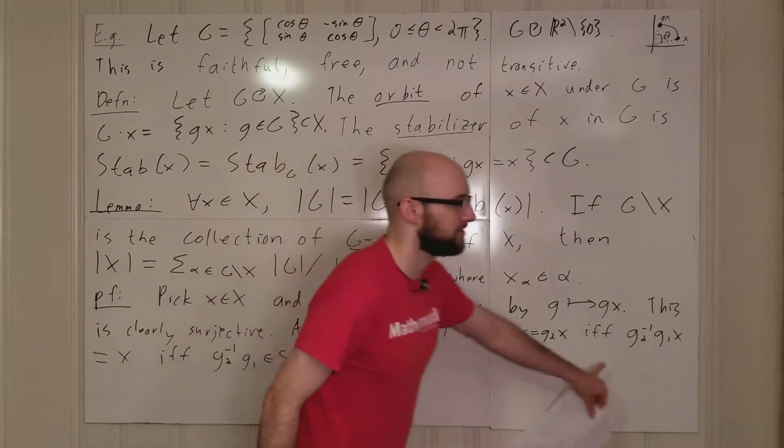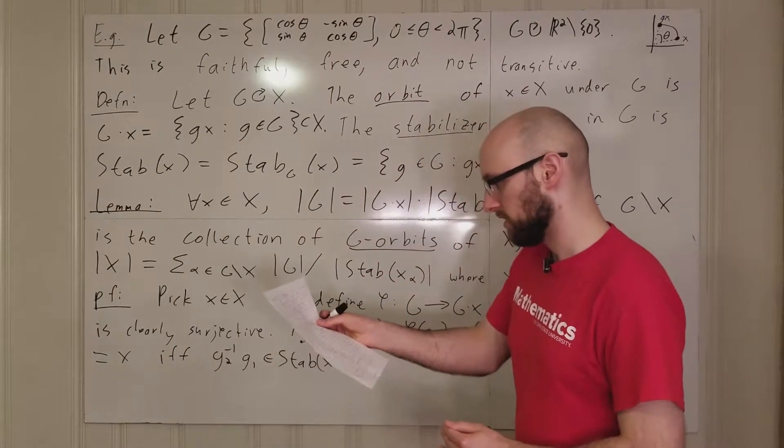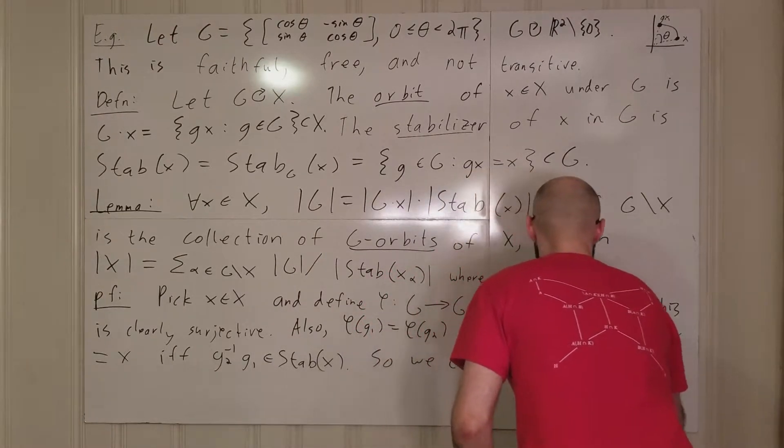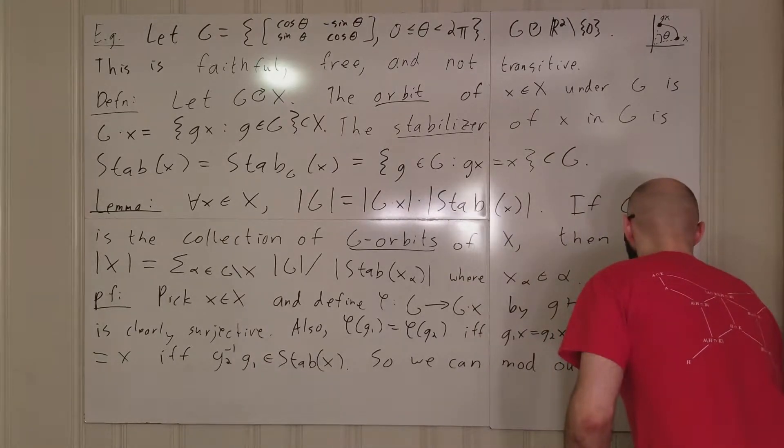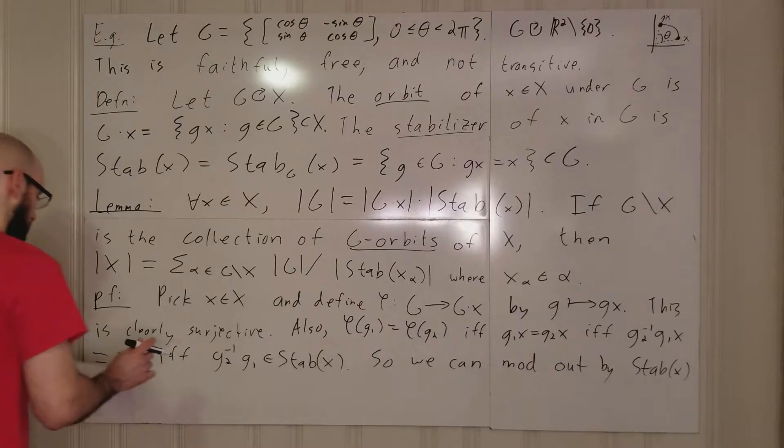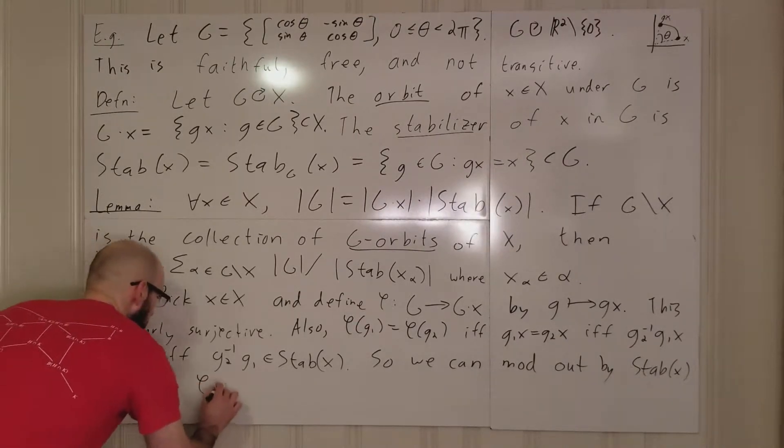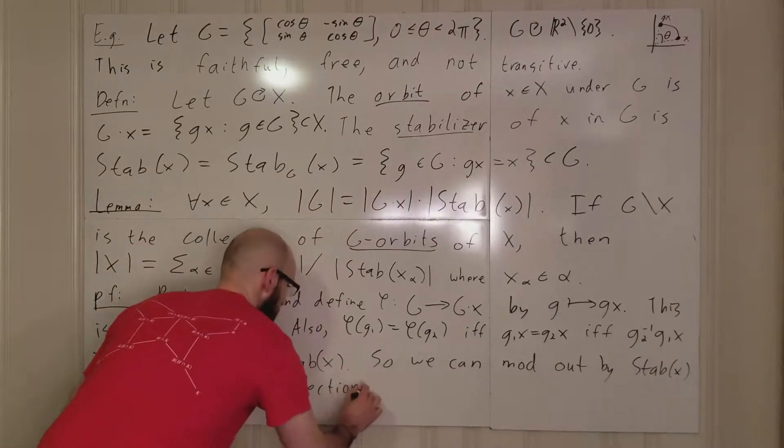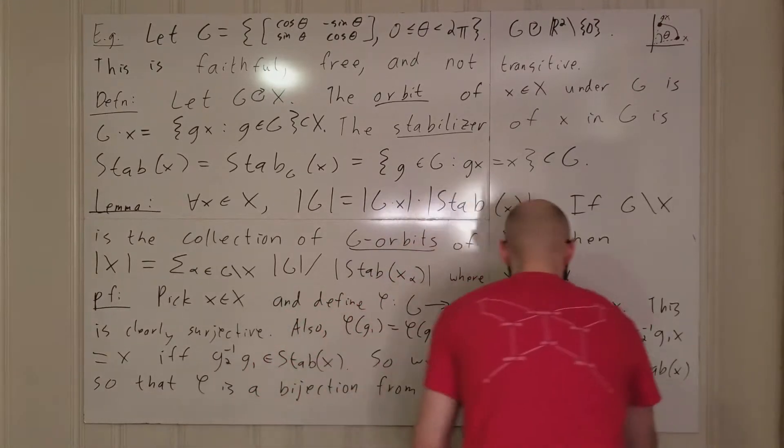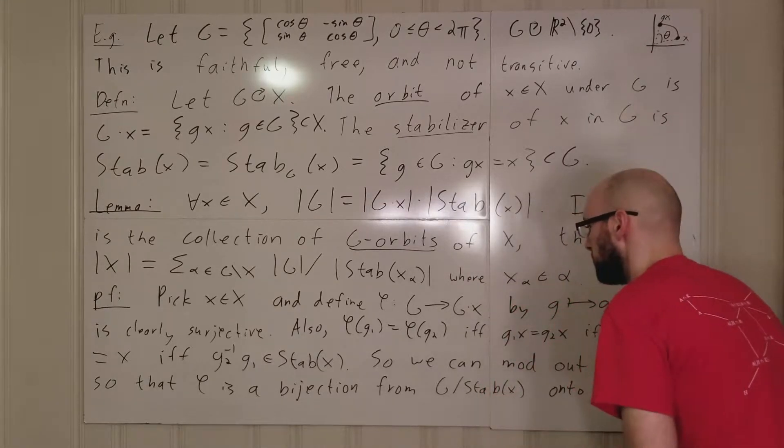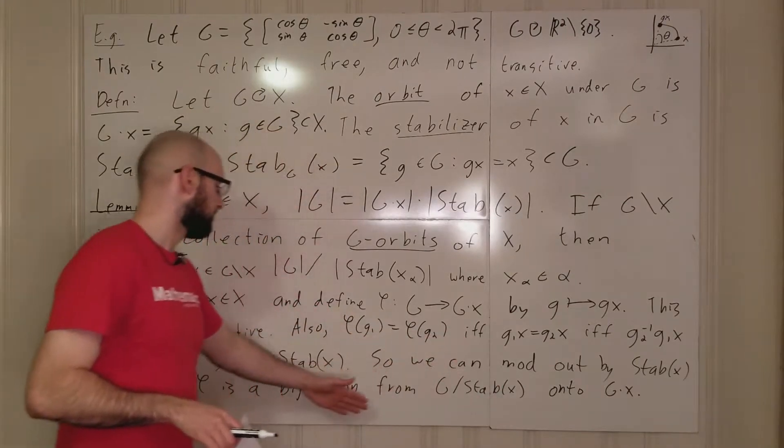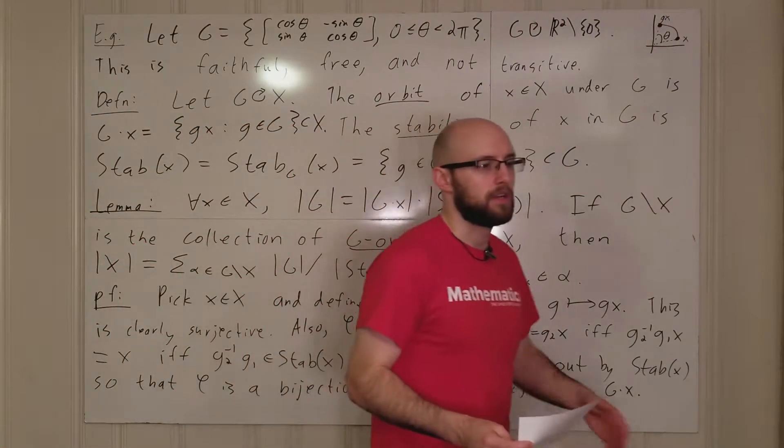So if and only if g2 inverse g1 is in the stabilizer of x. Because look, g2 inverse g1 stabilizes x. So then what? So we can mod out by the stabilizer of x. So that phi is a bijection from g mod stabilizer of x onto g times x. And of course, when I say onto, that's just referring again to the fact that it's surjective, which we know because it's a bijection.